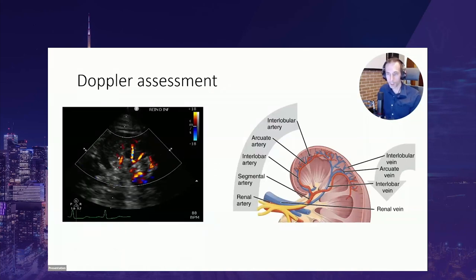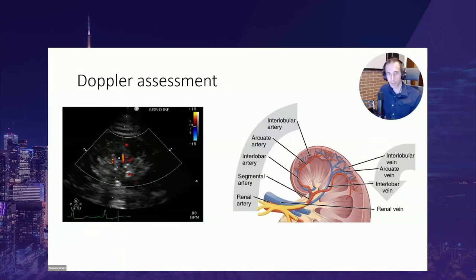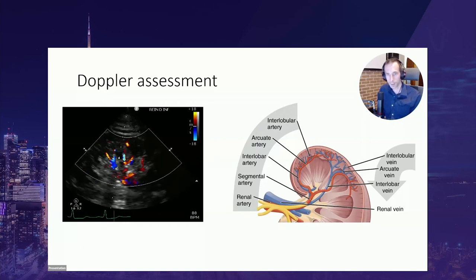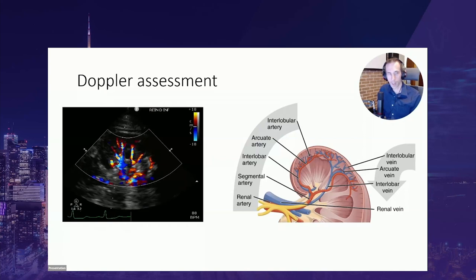When you turn on color Doppler, you can identify the normal vascular nature of the kidney. When the signal is good, you can usually identify the segmental arteries, the interlobar arteries, and the interlobular arteries. The interlobar arteries and veins are usually located between each of the pyramids of the medulla.